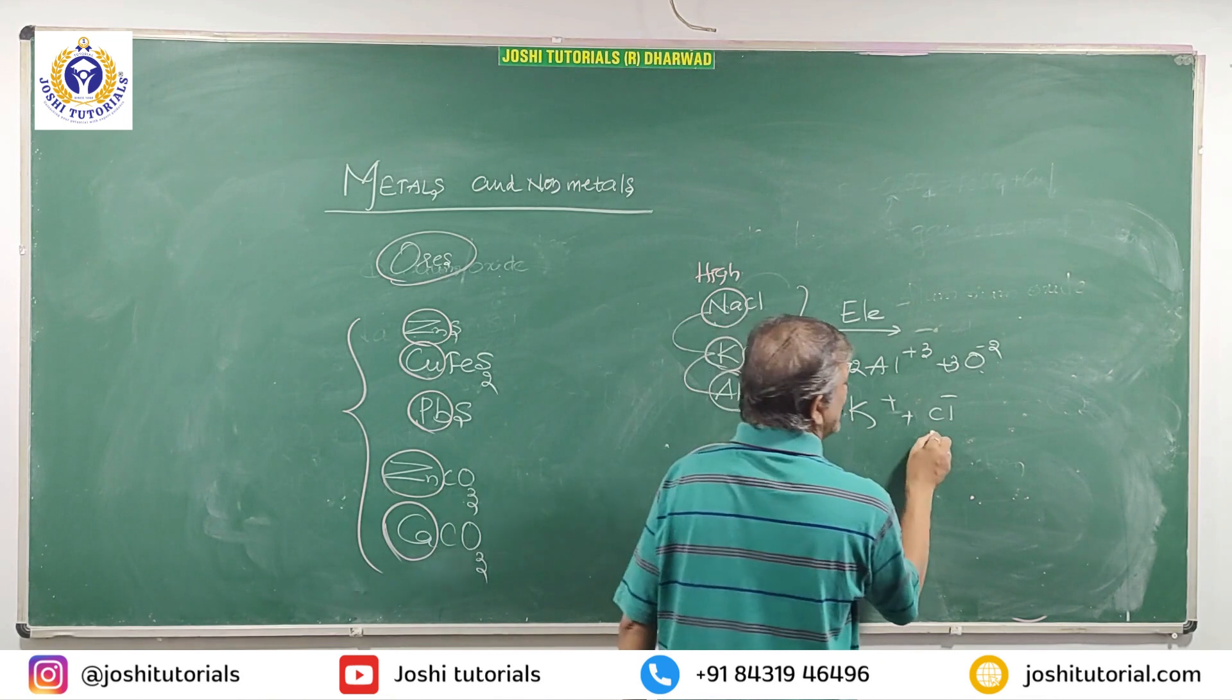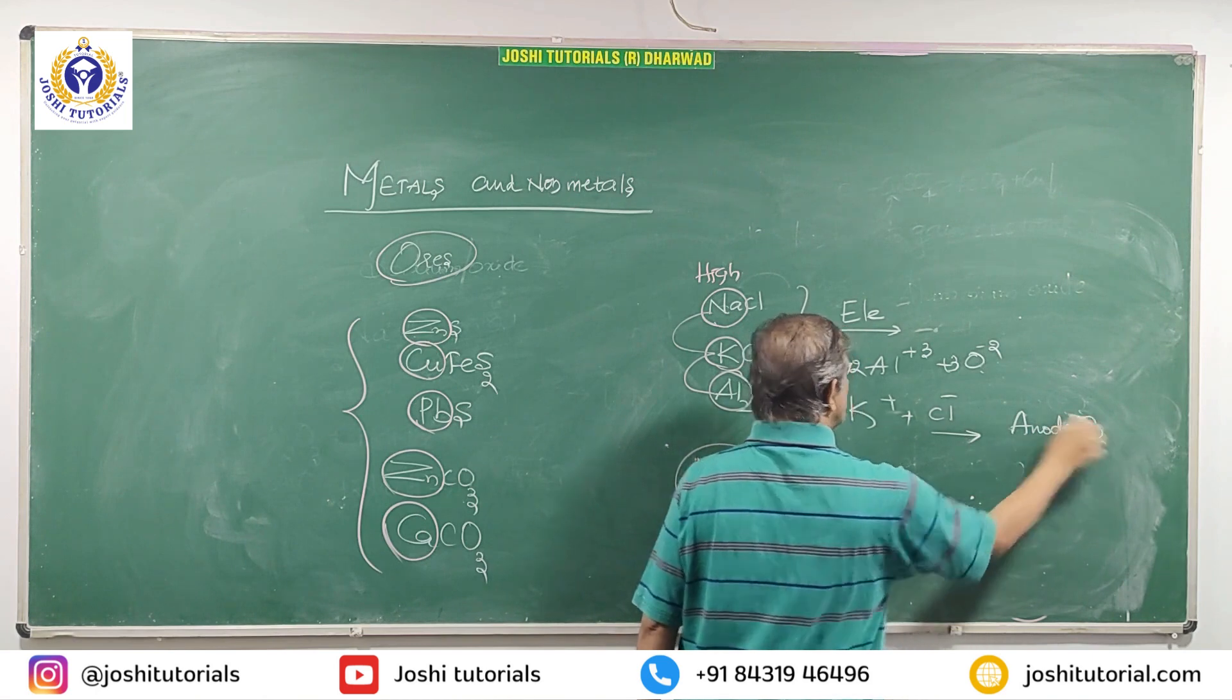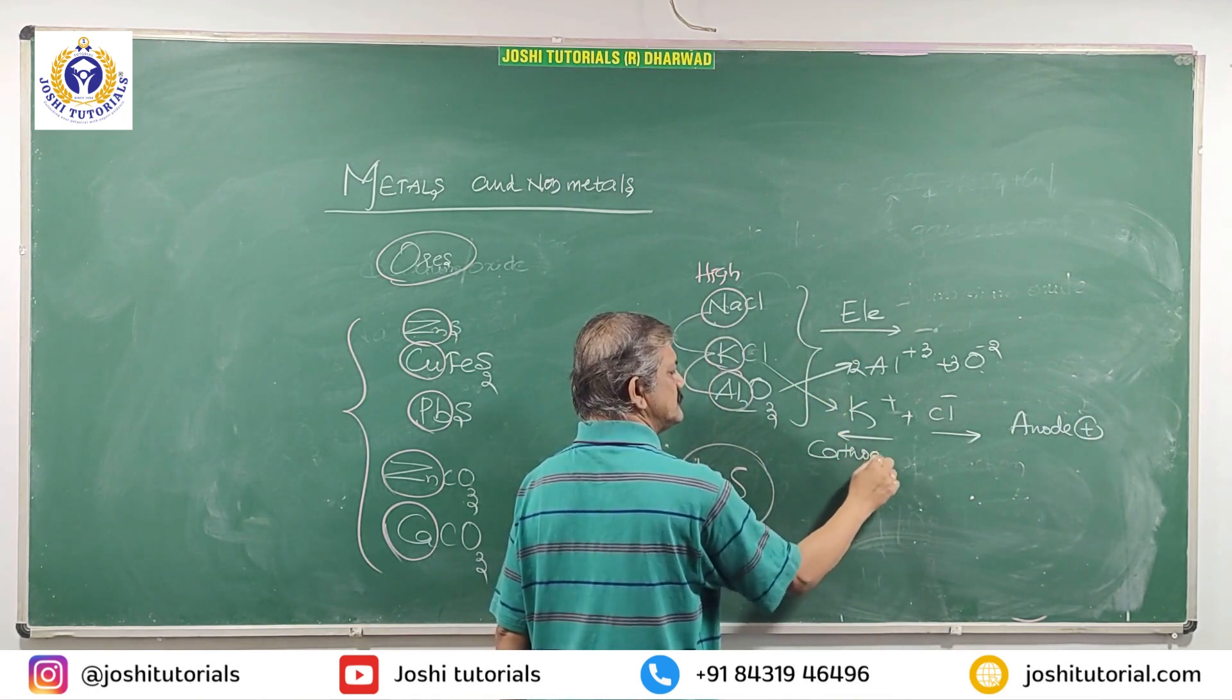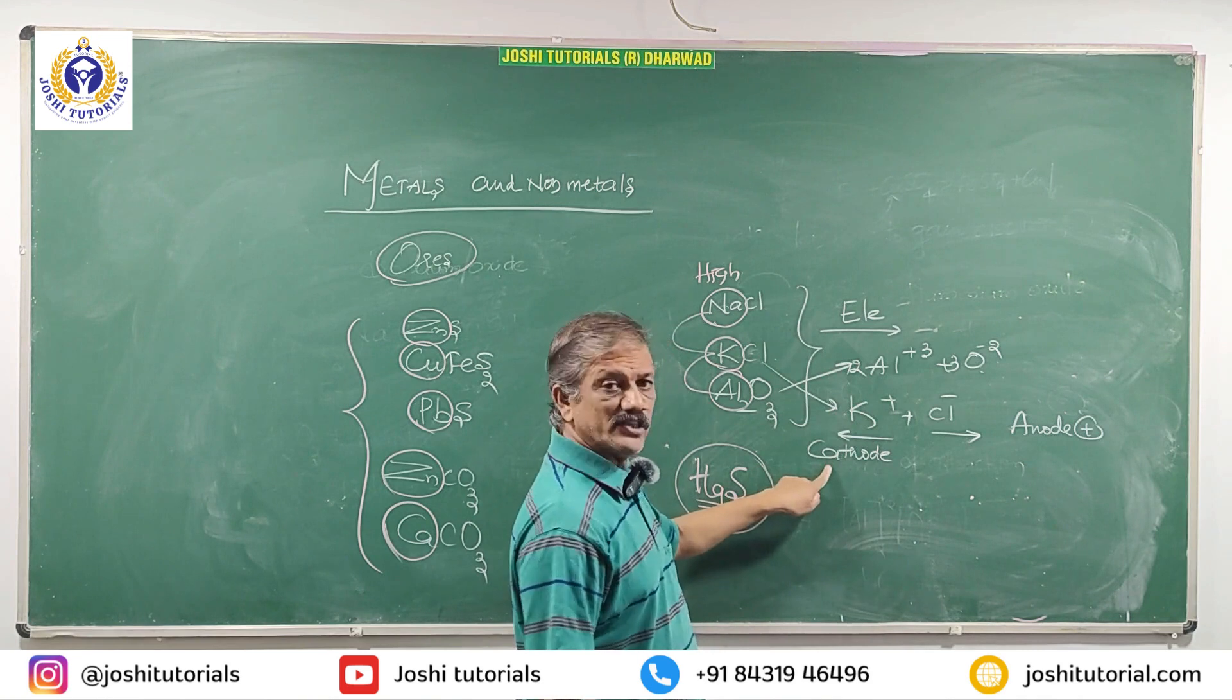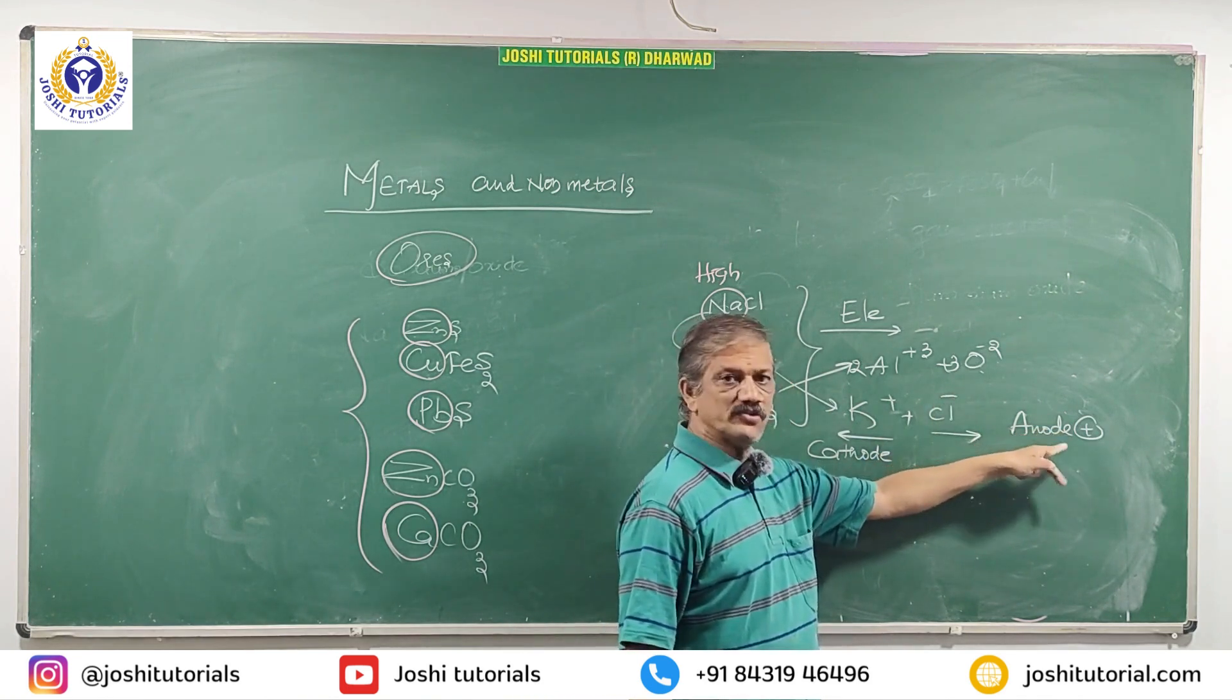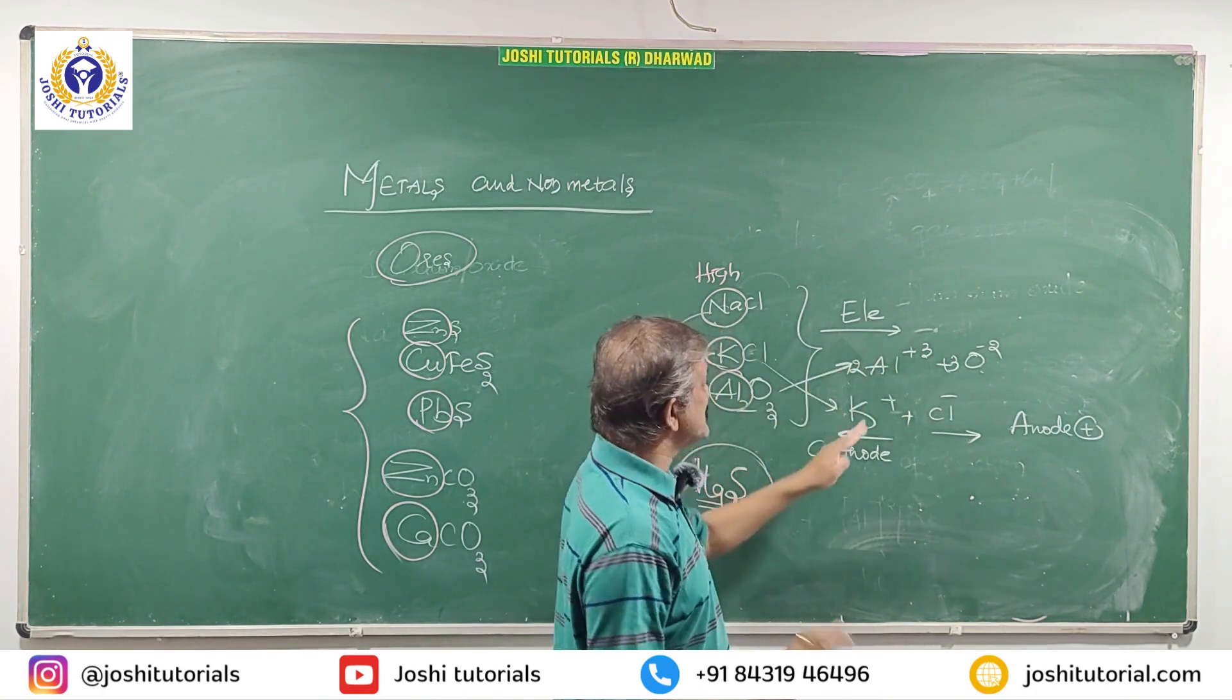They move, they migrate. This moves towards anode, it is positive. This moves towards cathode. It deposits as a metal. Because it is cation, cathode is negative. It is anion, anode is positive. They bifurcate. Aluminum bifurcates just by passing electricity.